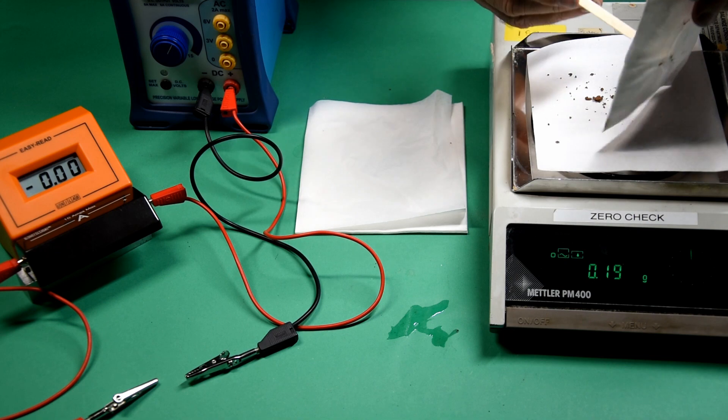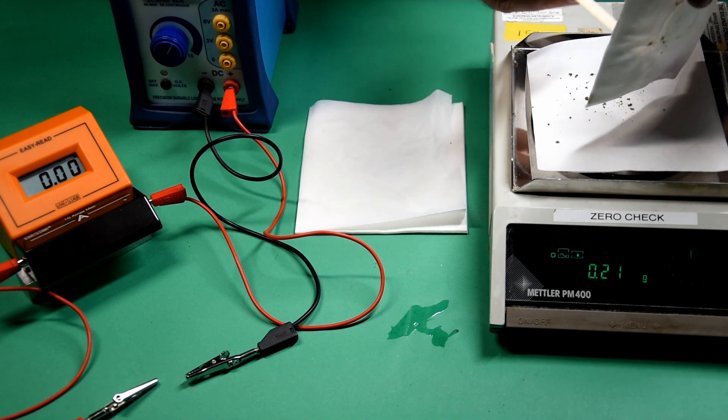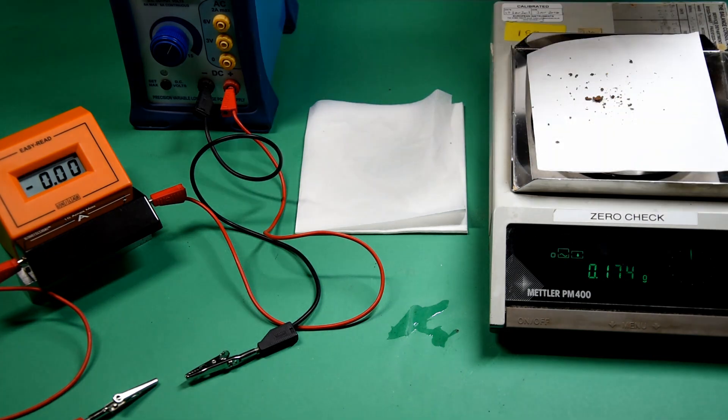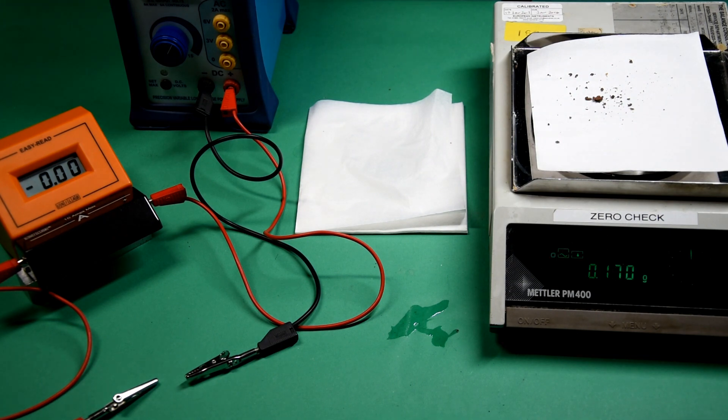Having left this to dry, we find that the mass of the sludge turns out to be about 0.17 of a gram.